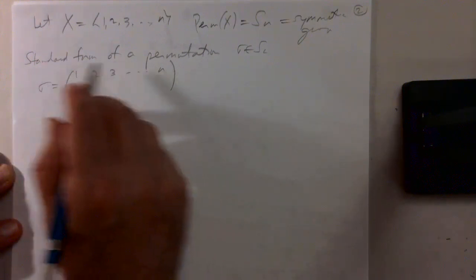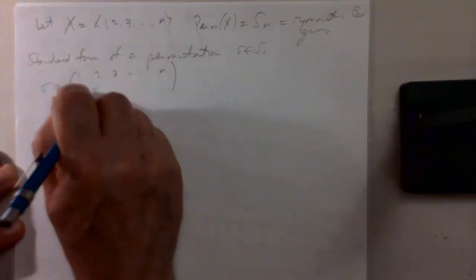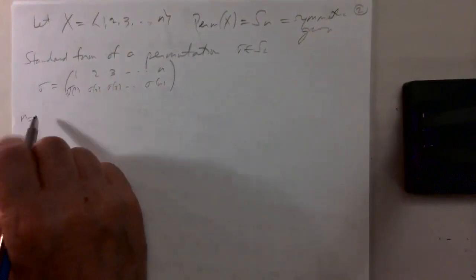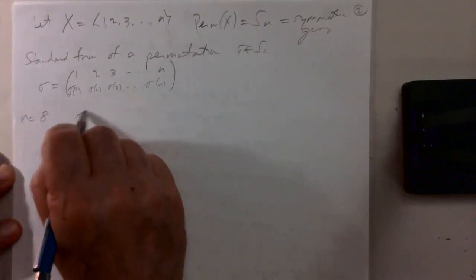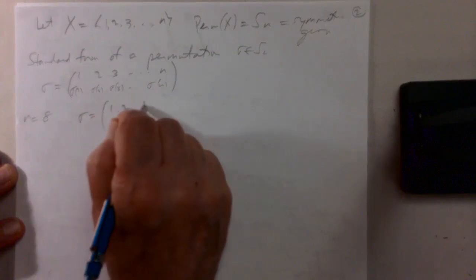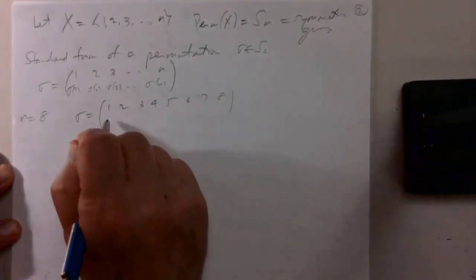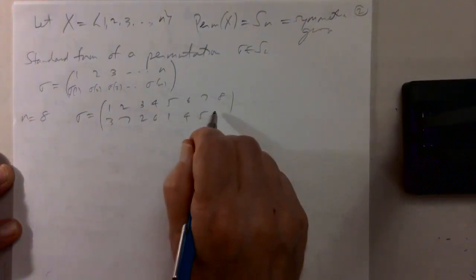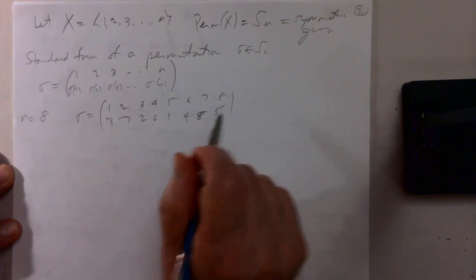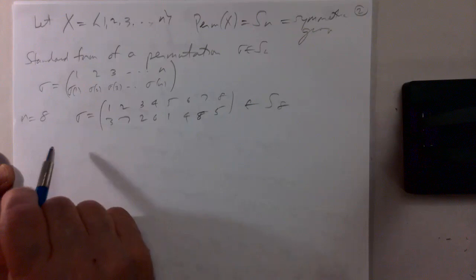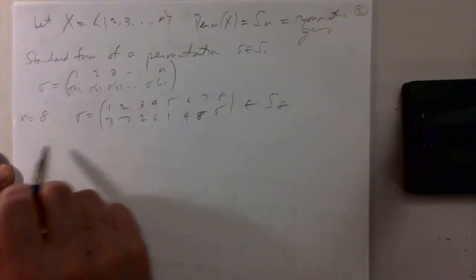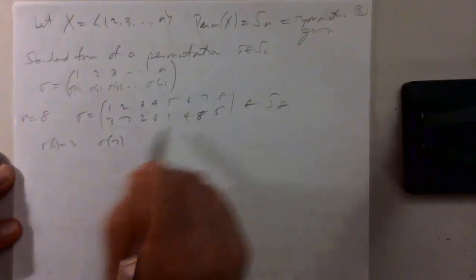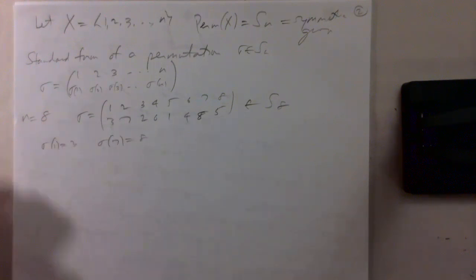In the top row you write 1 to n, and in the second row you write sigma of 1, sigma of 2, sigma of 3, up to sigma of n. For example, if n equals 8 and you take the permutation with top row 1,2,3,4,5,6,7,8 and bottom row 3,7,2,6,1,4,5,8 — wait, with sigma(1)=3, sigma(7)=8, and so on — that's the standard form of a permutation.